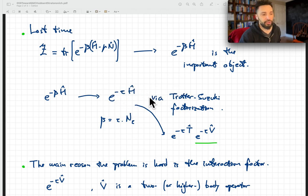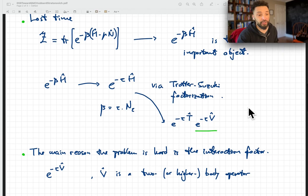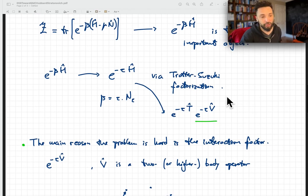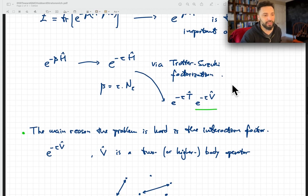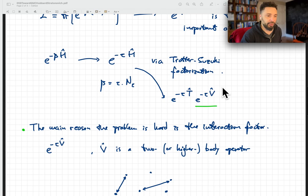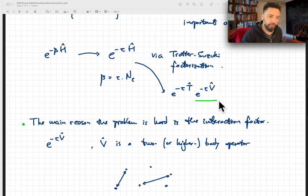It is at this point that we're able to break up the Hamiltonian into its kinetic and potential energy parts via the Trotter-Suzuki factorization. I'm going to consider the simplest Trotter-Suzuki factorization, but whatever I'm going to be doing here today can be done for any of the Trotter-Suzuki factorizations.